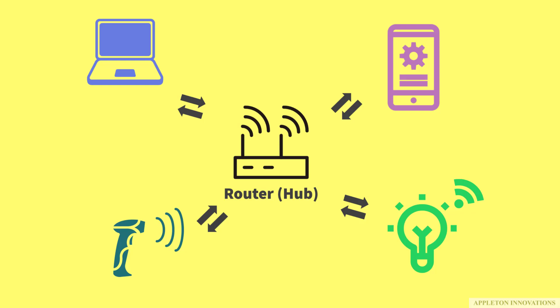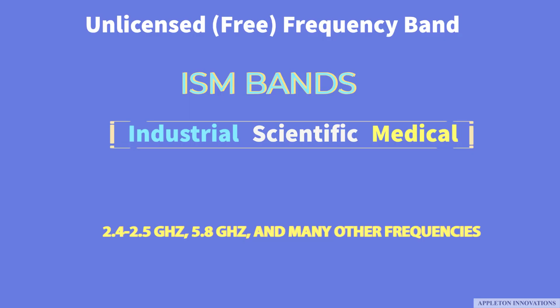Wi-Fi operates in the freeband. Most commercial wireless devices such as mobile phones and televisions use licensed radio frequencies and must pay a fee to use those frequency bands. Large organizations pay licensing fees for the right to use those radio frequencies. However, Wi-Fi uses unlicensed spectrum, meaning no license fee is required to operate Wi-Fi equipment. The Industrial, Scientific, and Medical band — commonly called the ISM band — allows for unlicensed use of 2.4 to 2.5 GHz, 5.8 GHz, and many other frequencies.